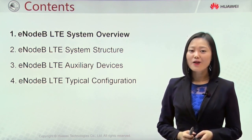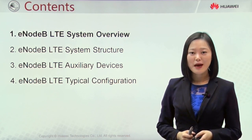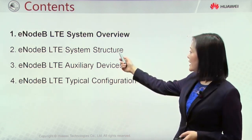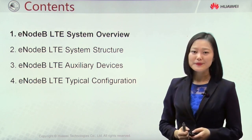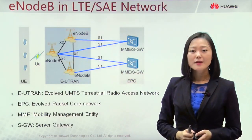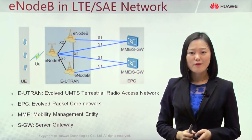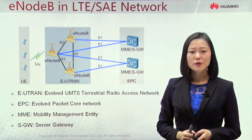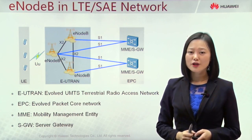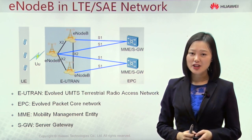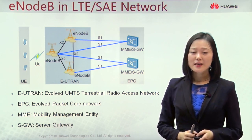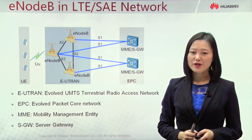Now let's start from the first chapter: LTE system overview. As we know, the mobile network has been evolving for many years — from the first 2G network, the GSM network, which was launched commercially in the 1980s, to today's 4G, the fourth generation network.